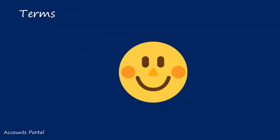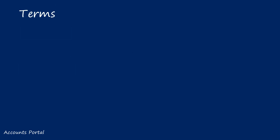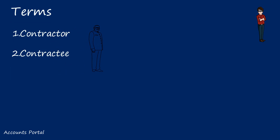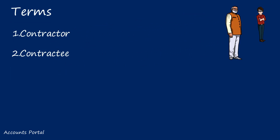Before moving on, we will learn the terms used in this chapter. First: contractor — the construction company which takes the contract. In our story, that is Raghubaran Constructions Limited. Second: contractee — the person who gives the contract to the contractor. In our story, that is the government. In this chapter, we will prepare books of accounts of the contractor.